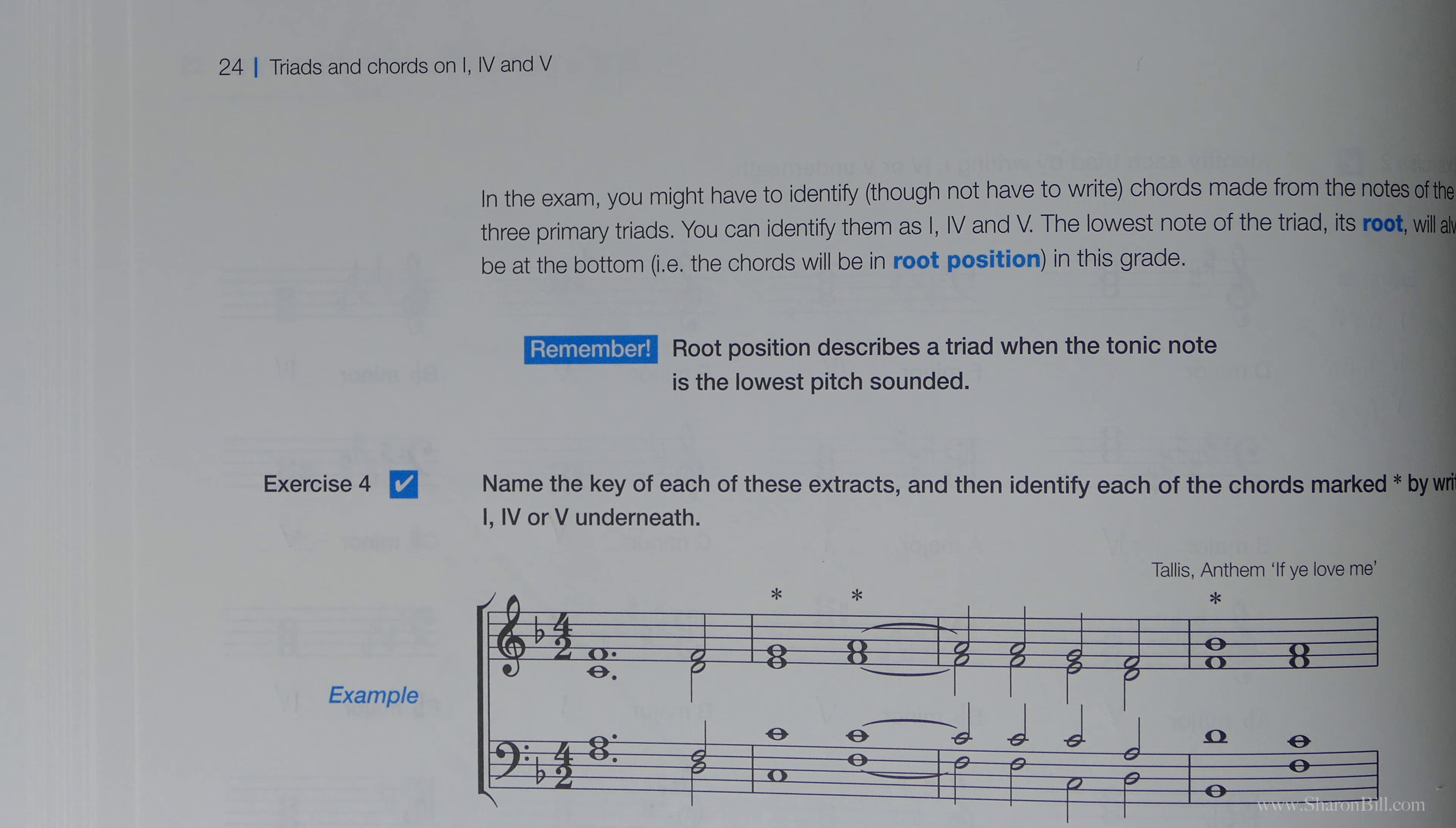And so let's see that in action now in this next exercise four, which asks us to name the key of each of these extracts. We can't name the chords until we know the key, until we know the tonic, nothing else makes sense. And then we need to identify the chords by marking underneath whether it's 1, 4 or 5, tonic, subdominant or dominant.